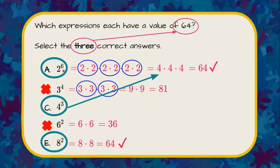So our three correct answers are A, two to the sixth; C, four cubed; and E, eight squared.